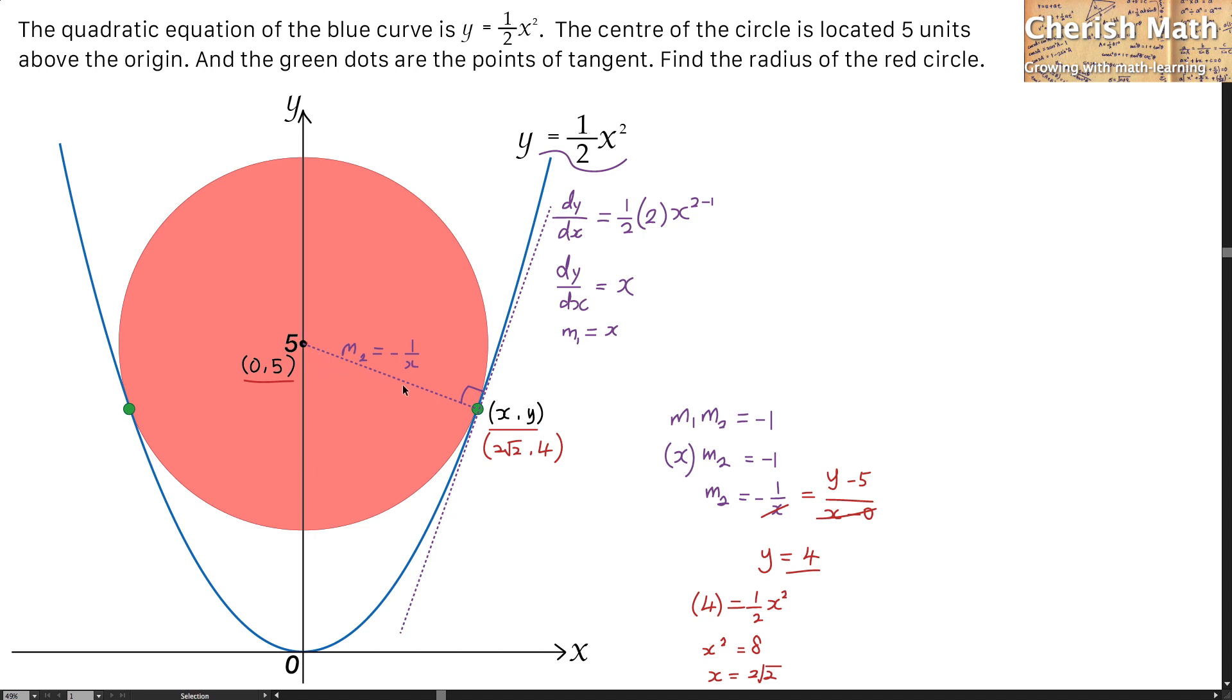To find the length of this radius, the method that I'm going to use is none other than the Pythagorean theorem. And this is how it goes. To make it simpler, the value of r is going to be 3 units.